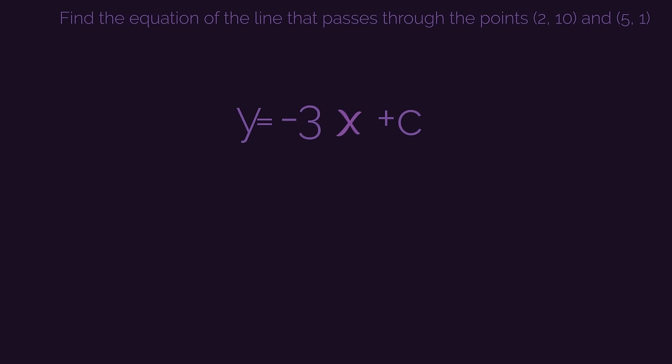So to find the missing y-intercept, the c, we just substitute in either (2, 10) or (5, 1). It doesn't matter, just choose one of them. I'm going to use (5, 1).